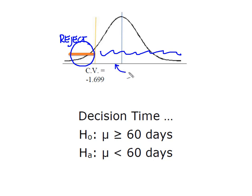We calculated our test statistic to be a negative 0.78, which falls into the do not reject region of the curve. So now we can make our decision.